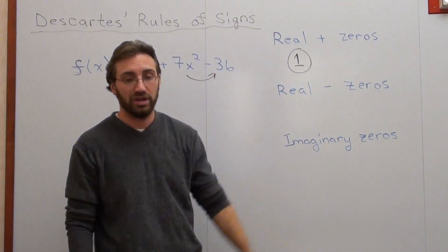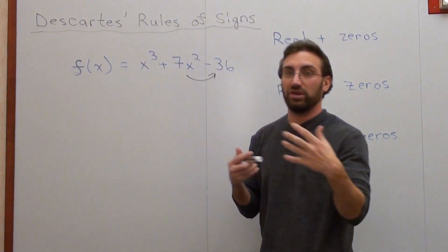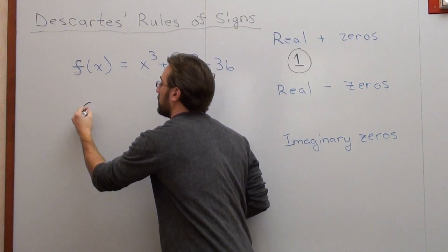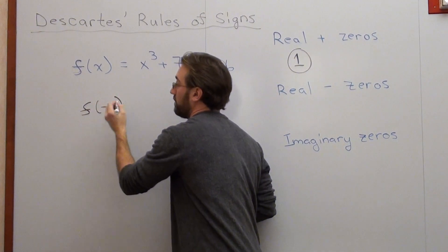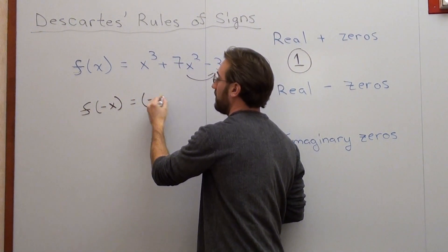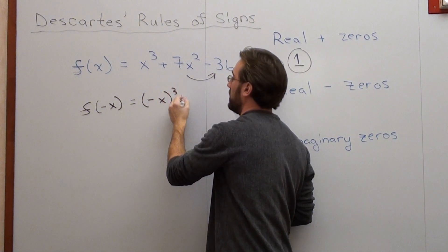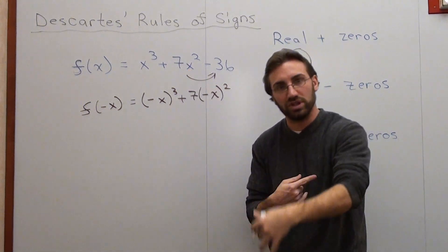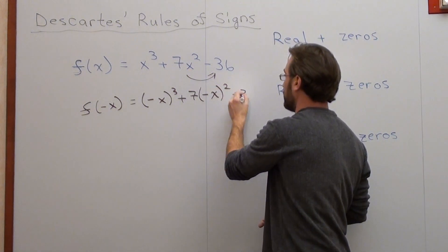Okay, real negative zeros now. To figure out real negative zeros, replace positive x with negative x. So f(-x). When I do that, I've got (-x)³ + 7(-x)² - 36. Every time I see an x, I just put a negative x.